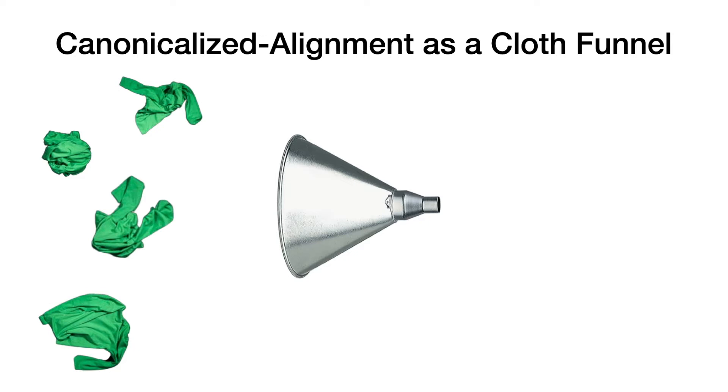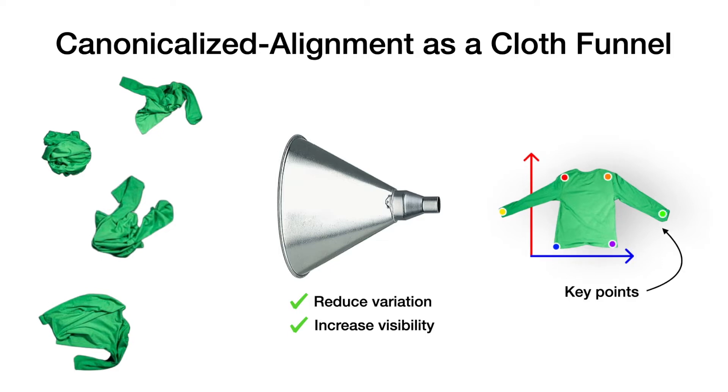Because canonicalized alignment can act as a cloth state funnel, taking in a diverse set of self-occluded configurations and turning it into a structured state. This not only reduces the variation that downstream tasks need to deal with, but it also increases visibility so that something like a keypoint detector can work with a high success rate.